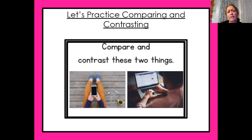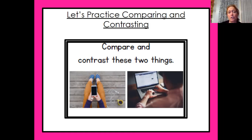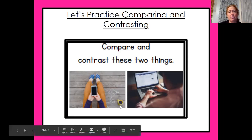Okay, so the ways that they are the same: they both have technology in the picture, and there are both people using the technology. Ways that they're different could be that one piece of technology is a phone and the other one is a laptop. Also, this person has something to drink and also has earbuds, whereas this person does not.